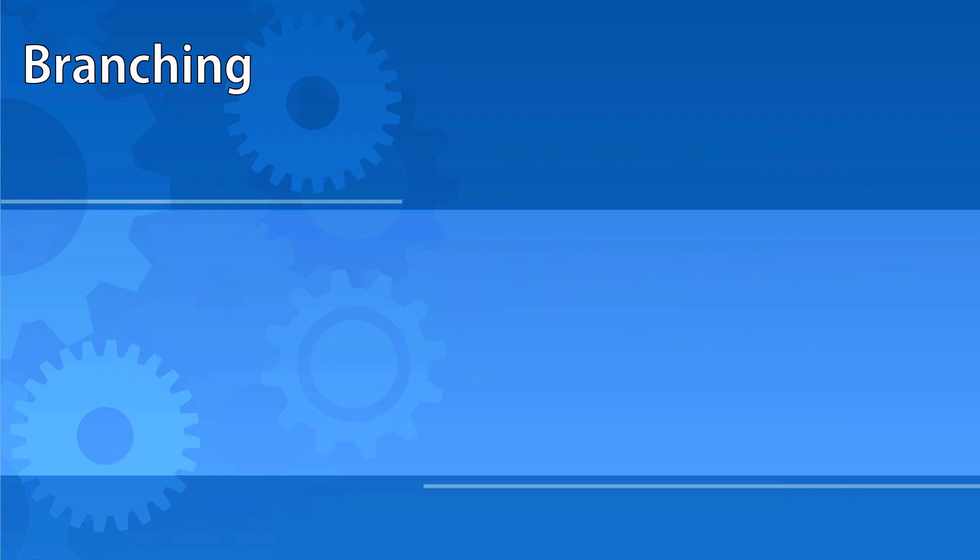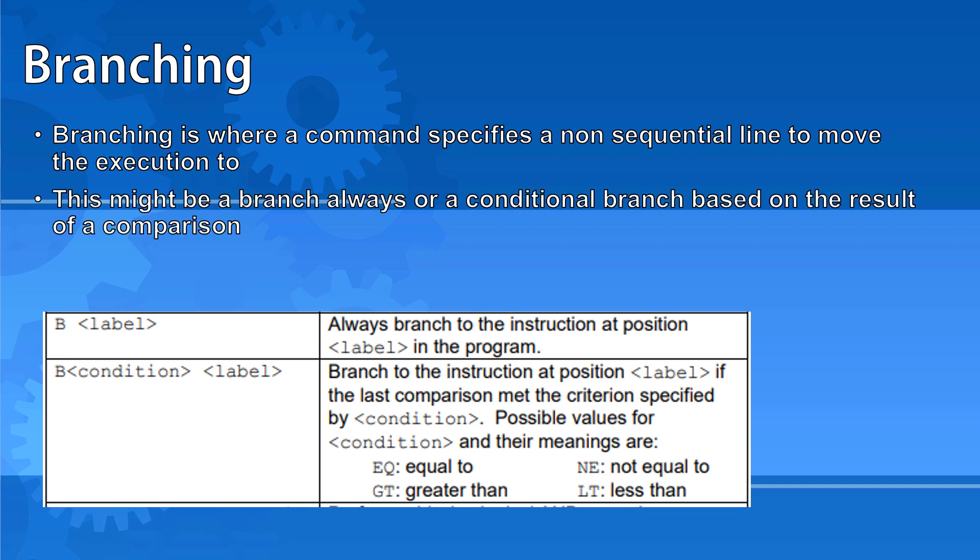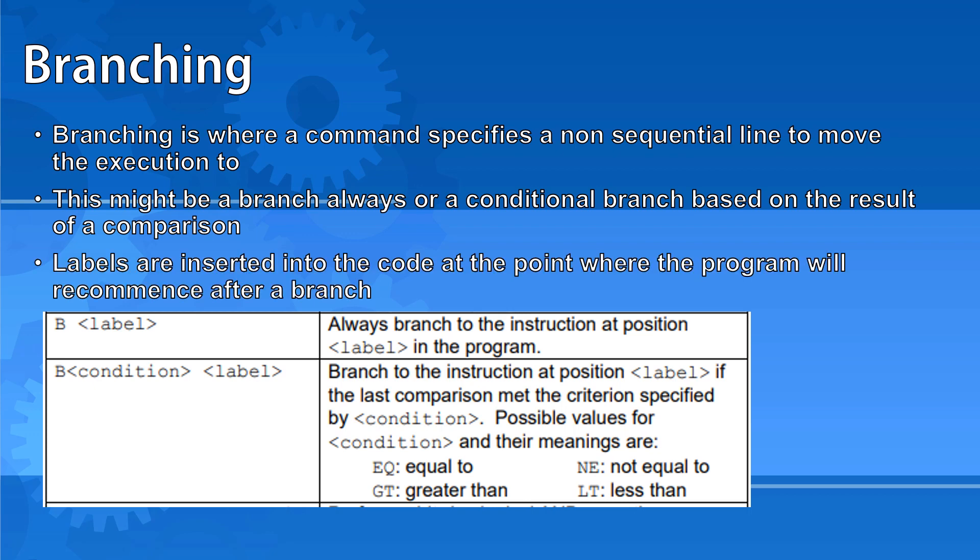Branching is where a command specifies a non-sequential line to move the execution to next. This might be a branch always, that happens every time that line of code is met, or a conditional branch based on the result of the comparison we've just made. Labels are inserted into the code at the point where the program will recommence after a branch.